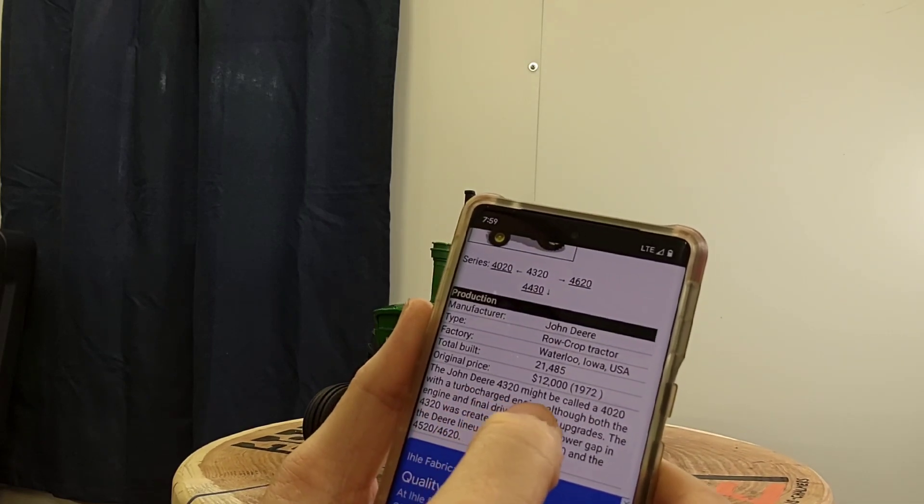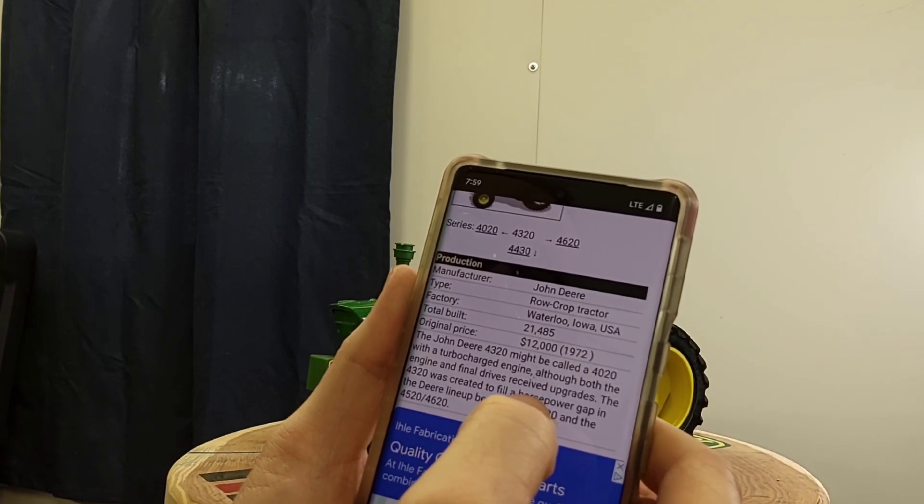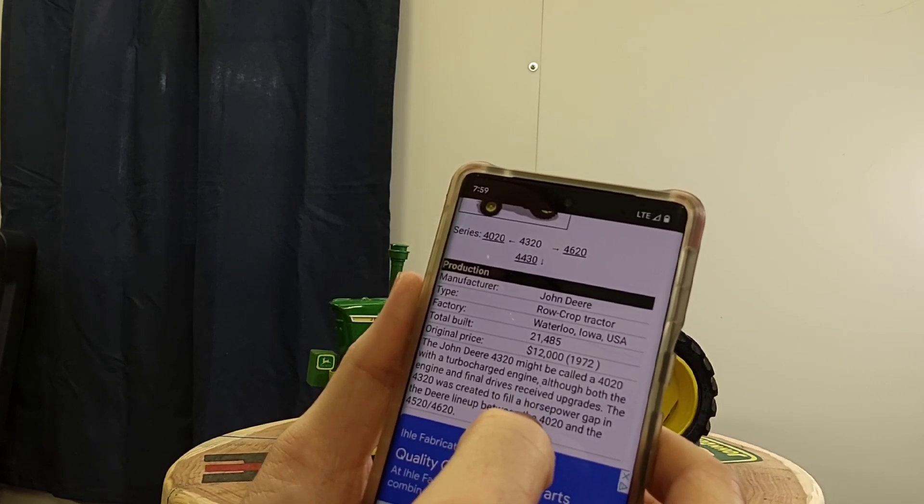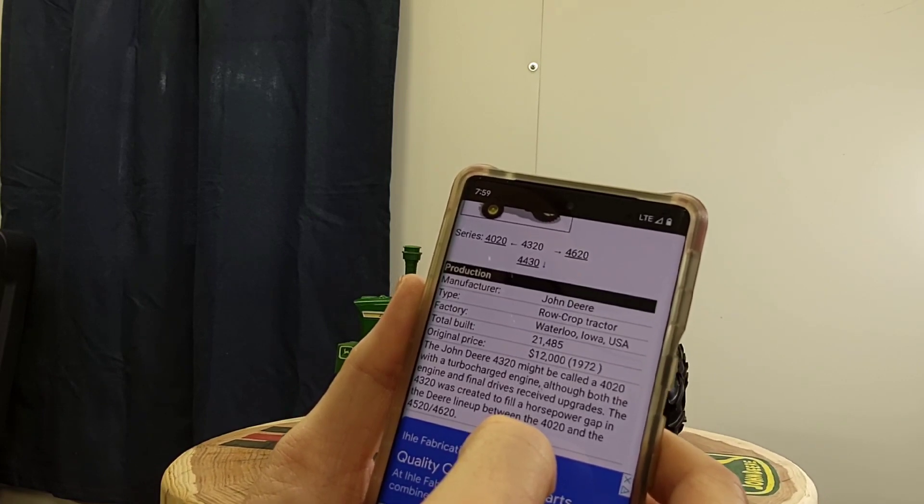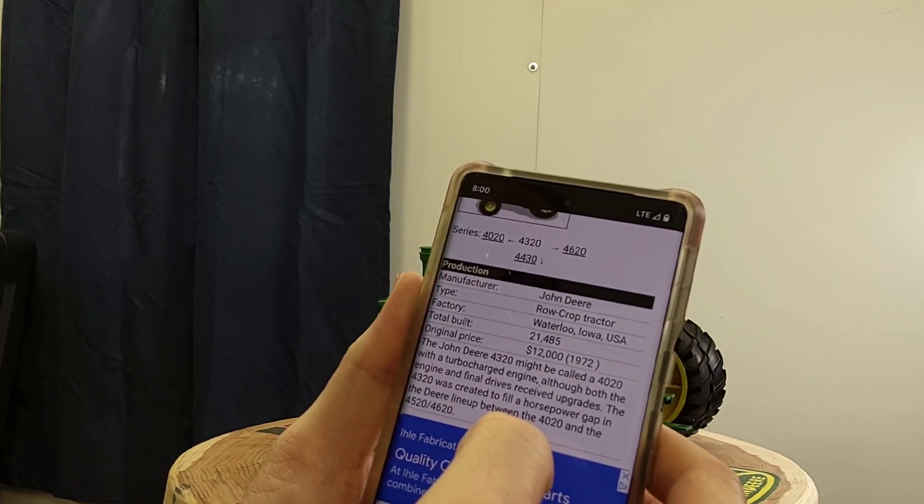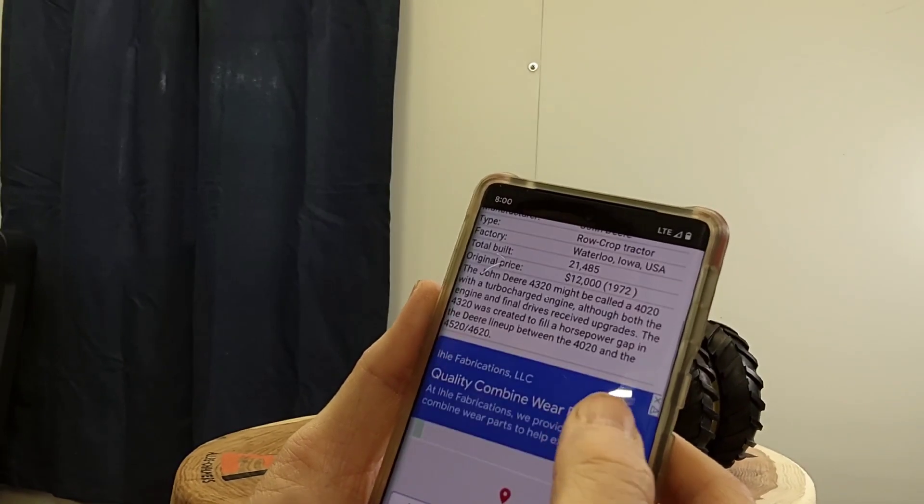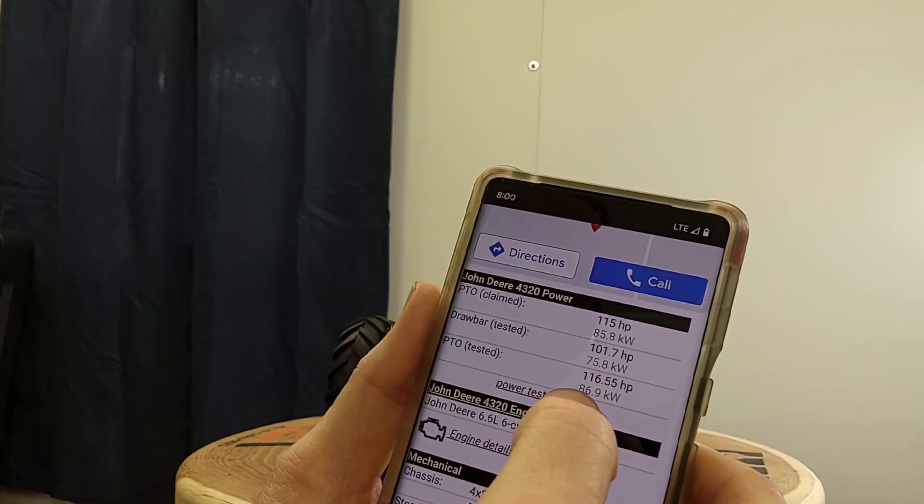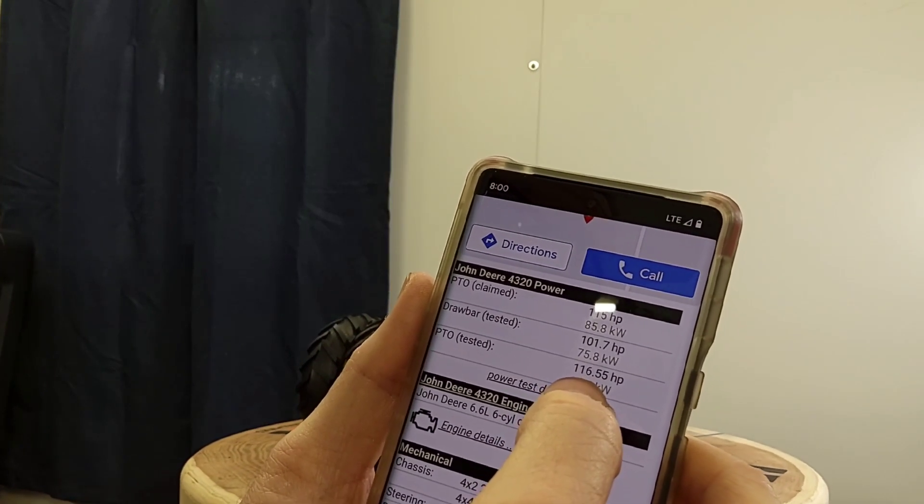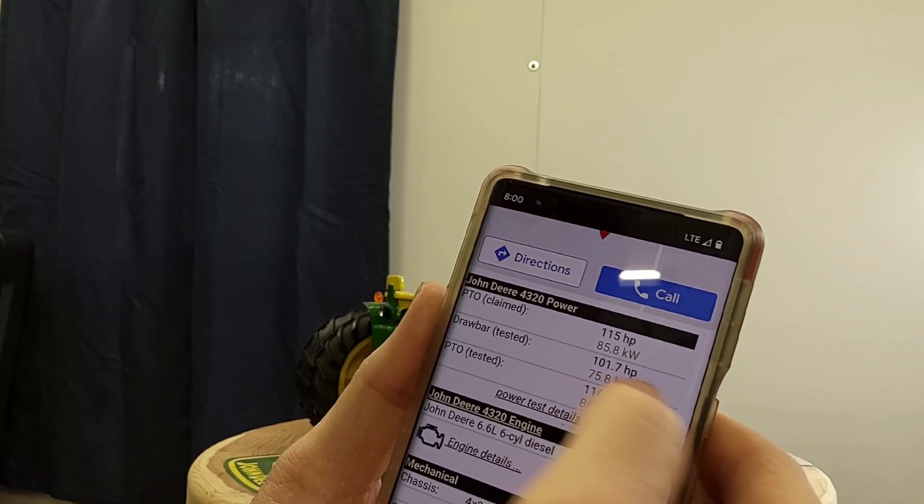The John Deere 4320 might be called a 4020 with a turbocharged engine. Although both the engine and final drive received upgrades, the 4320 was created to fulfill a horsepower gap in the John Deere lineup between the 4020 and the 4620. Power PTO tested 116.5, drawbar tested 101.7.